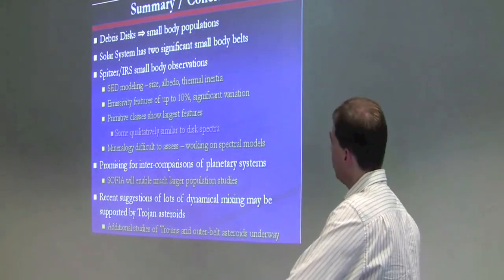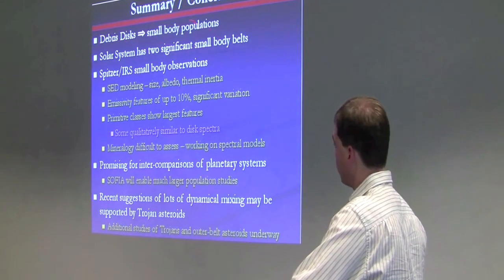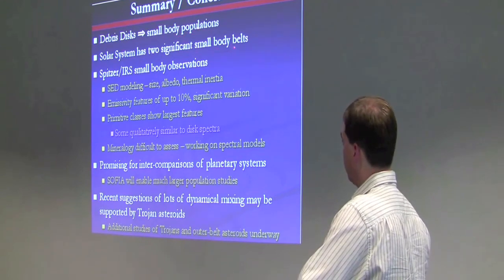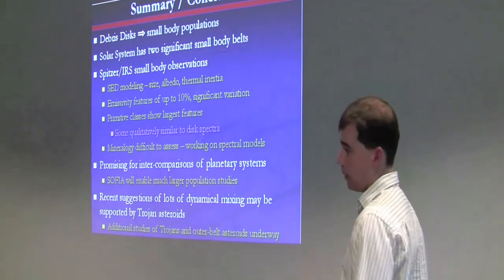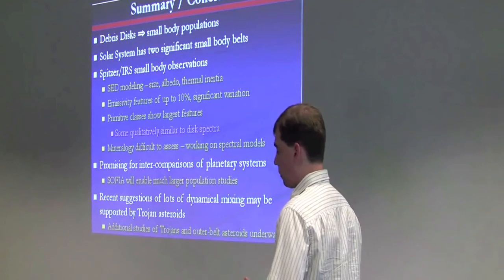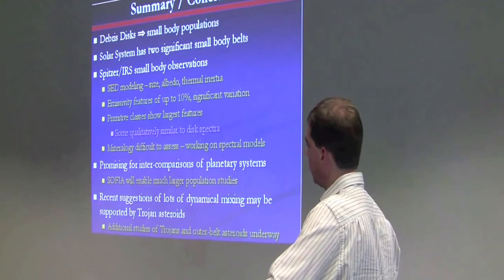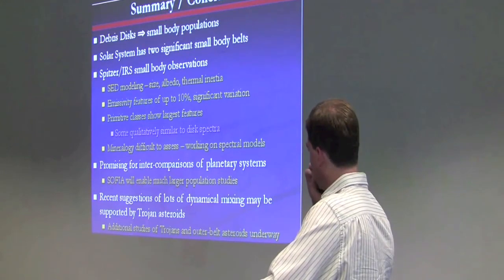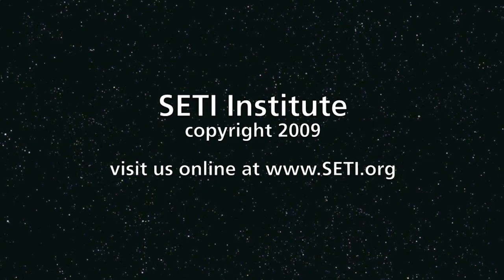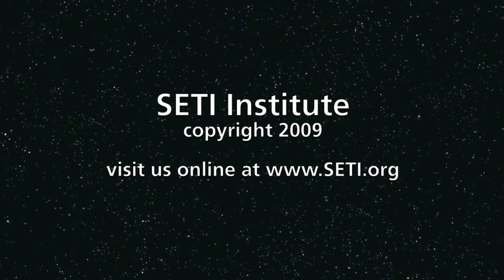So to conclude, we see debris disks around other stars that imply small body populations around other stars. The solar system, of course, has two significant small body belts, and comparing them will be important for informing both the formation of our solar system and how other planetary systems form, and how likely it is to have planetary systems, I think.